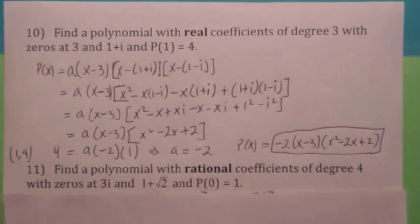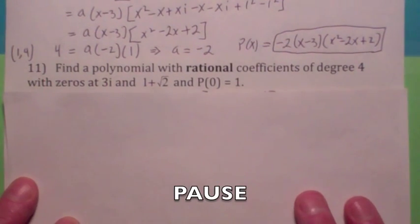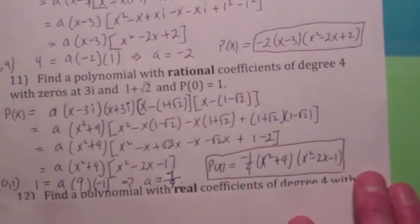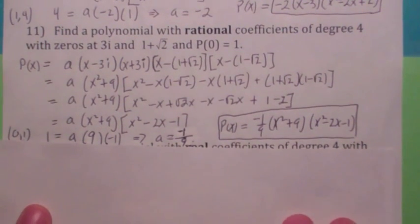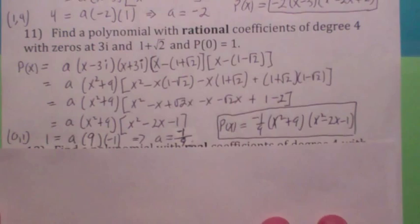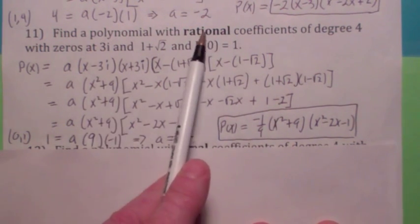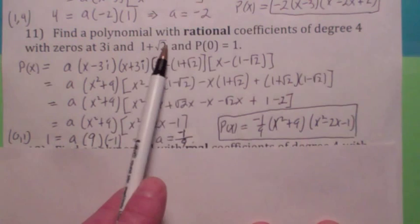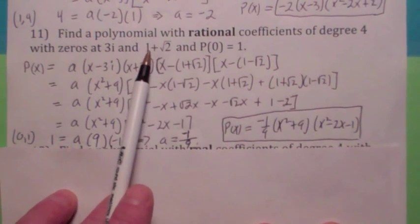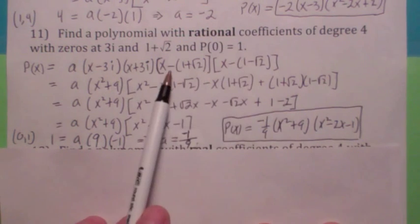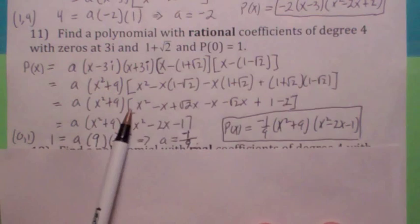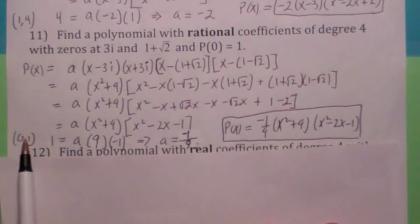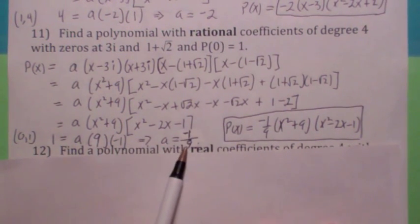Why don't you give one a try? I'll give you a couple minutes, and then I'll give you the answer. It has rational coefficients, so those are real. So you have to have 3i and minus 3i as zeros, and since there are rational coefficients, if 1 plus radical 2 is a zero, so is 1 minus radical 2. So you have x minus (1 plus radical 2) and x minus (1 minus radical 2). When you multiply this out carefully and use the fact that p of 0 is 1, you find a is negative 1 ninth. This is your answer.